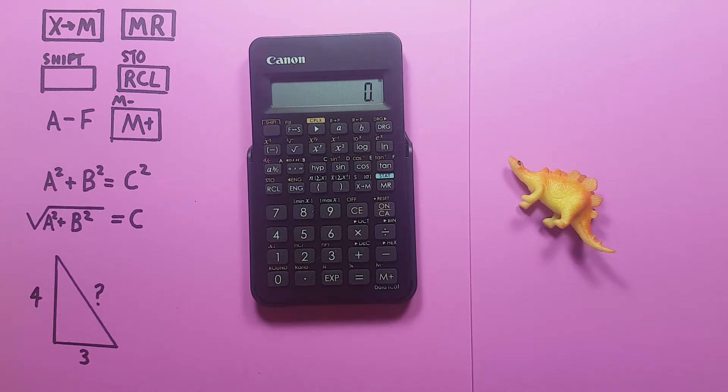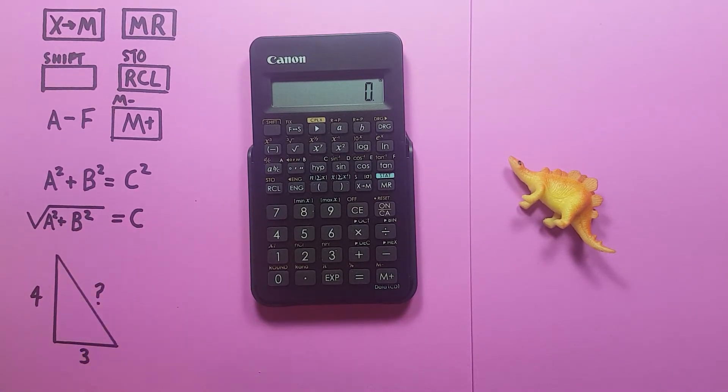The variable memory function is particularly useful when doing a long equation that has variables or letters involved. So for example, say doing the Pythagorean equation to solve for the hypotenuse on a right angle triangle which is A squared plus B squared equals C squared and can be written as the square root of A squared plus B squared equals C. We have this triangle here, let's say our A side has a length of 4 and our B side has a length of 3.